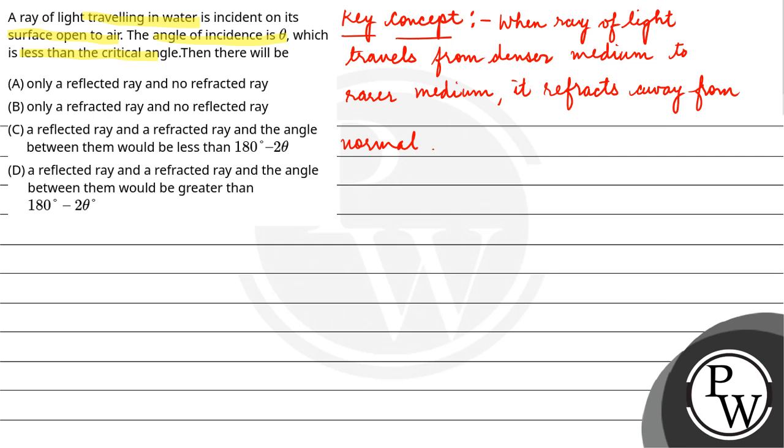What do we have in the question? There are two mediums air and water, and the incident ray is falling on the interface. This is the incident ray and the angle of incidence is given as theta. Part of it will get reflected and if this is normal,